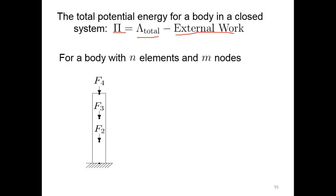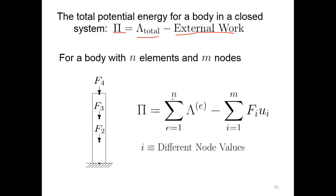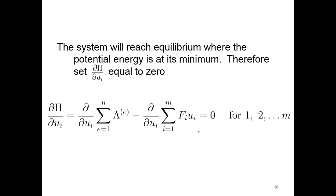For a body with n elements and m nodes, the total potential energy sums over all elements (e from one to n) and all nodes (i from one to m). The system reaches equilibrium where the potential energy is at its minimum. To find the minimum, we differentiate and set it equal to zero. So we differentiate the strain energy, differentiate the external work, set that equal to zero, and figure out when that occurs.